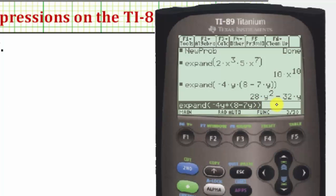and notice now we do get the product. The product is twenty-eight y squared minus thirty-two y. And notice how the calculator also put the terms in descending order.